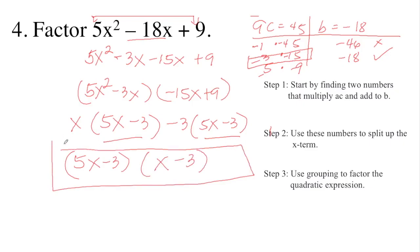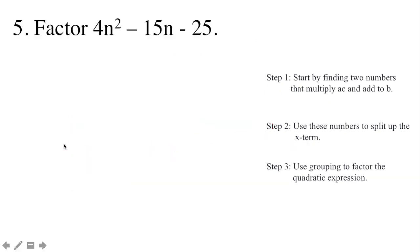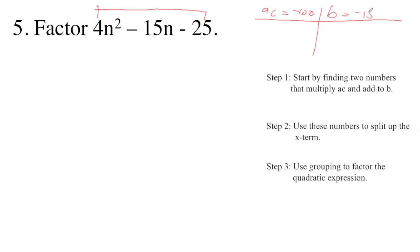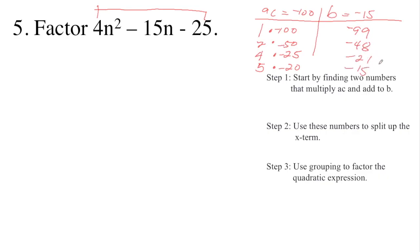Check it out to see if it's correct. Lastly, factor 4N squared minus 15N minus 25. As you can see, 4 times negative 25 equals negative 100, and the middle term is negative 15. Starting with factors: 1 times 100, 2 times 50, 4 times 25, 5 times 20. Since AC is negative and the sum is also negative, we test: negative 99, negative 48, negative 21, and negative 15. So the two numbers are 5 and negative 20.